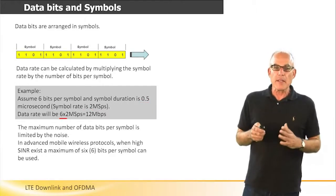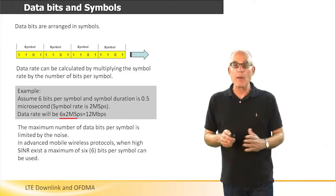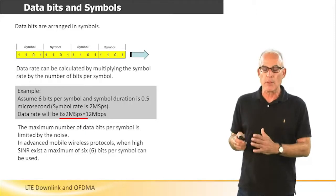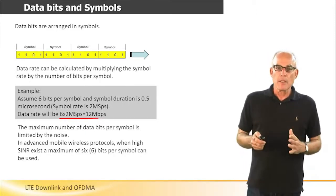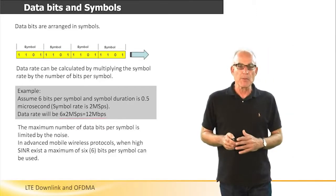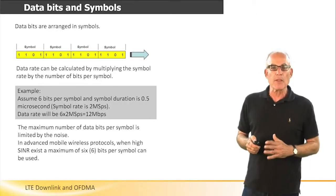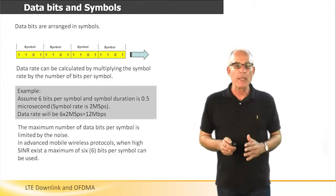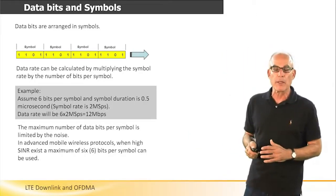In this case, the data rate — the bit rate — will be 6 bits multiplied by the symbol rate of 2 mega samples per second. This will provide 12 megabits per second. The maximum number of data bits per symbol is limited by the noise. In advanced mobile wireless protocols, when high SINR exists, a maximum of 6 bits per symbol can be used.